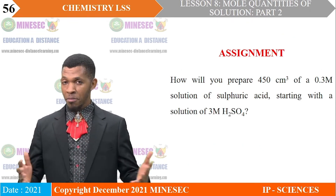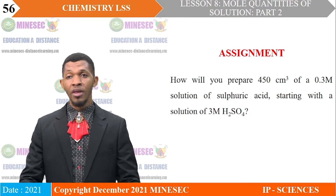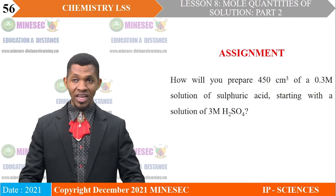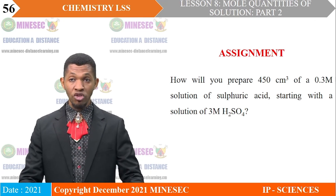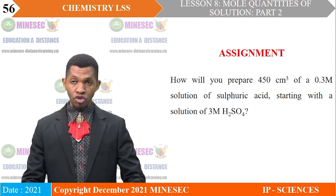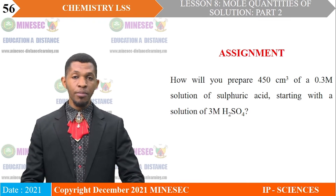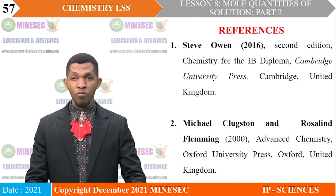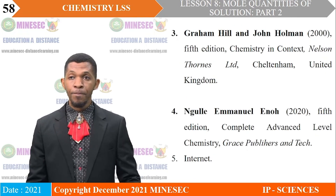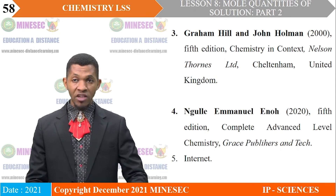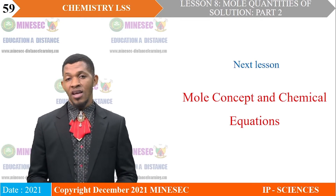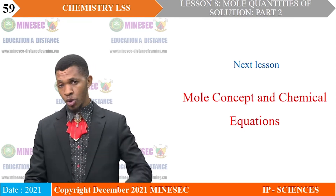Assignment: before our next lesson, answer this question — how will you prepare 450 cm³ of a 0.3 molar solution of sulfuric acid, starting with a solution of 3 molar sulfuric acid? We have come to the end of this lesson. Our next lesson will be on mole concepts and chemical equations. See you in the next lesson.